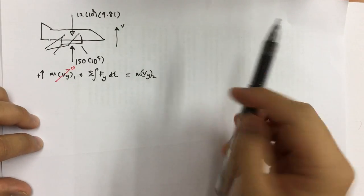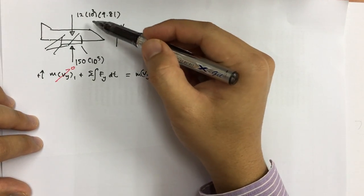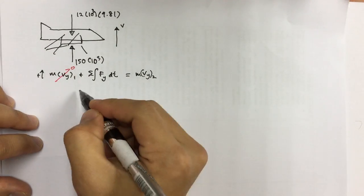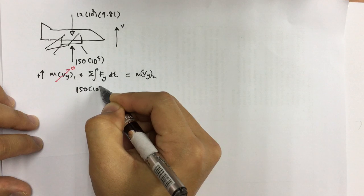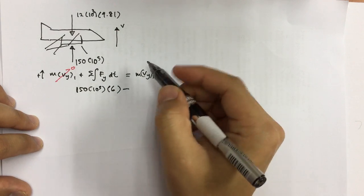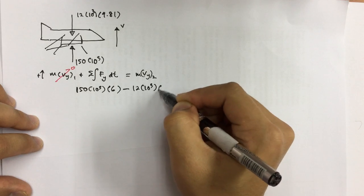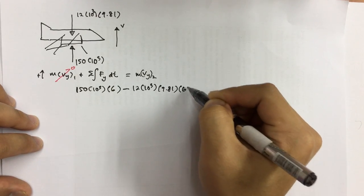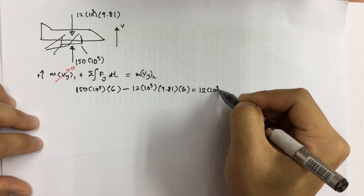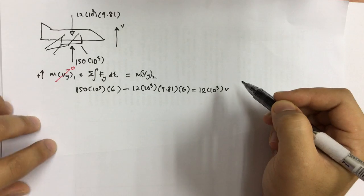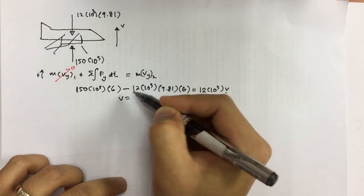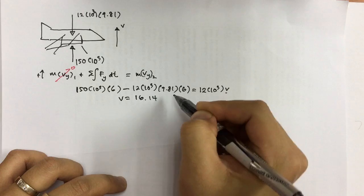So we don't have to worry about that. So the forces acting on the rocket is basically the gravitational force and the force exerted by the thruster. So the gravitational force is negative, the thruster is positive. So 150 times 10 to the power of 3 times the time, so we have 6 seconds of operation, and then the force going down, so 12 times 10 to the power of 3 times 9.81 times the time, which is 6. And then the mass of the jet itself, so 12 times 10 to the power of 3, and we don't know the final velocity. We want to know the final velocity. So once we have solved for all this, we can get the velocity. So V equals to 16.14 meter per second.